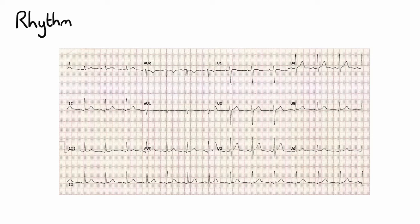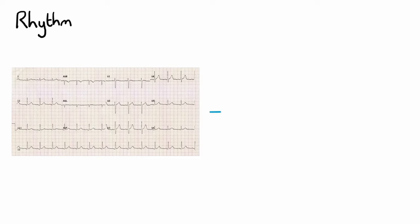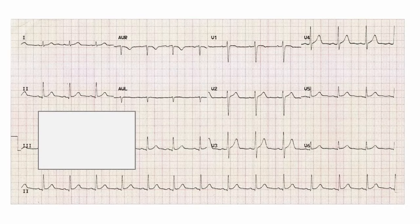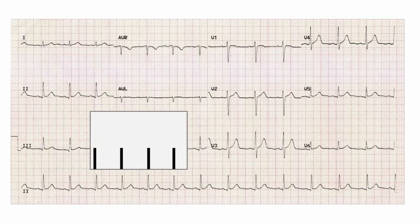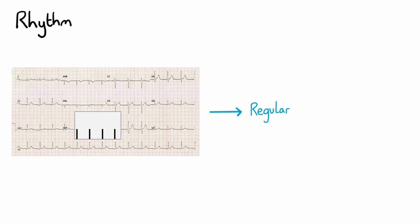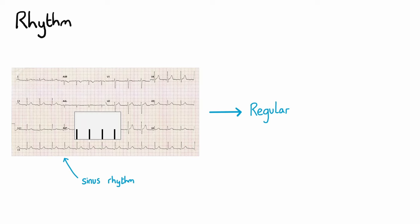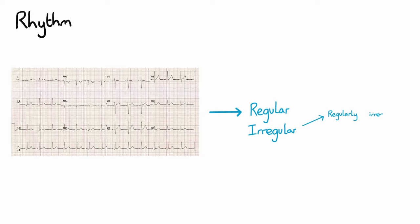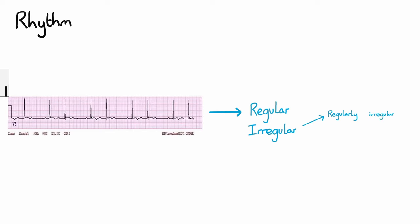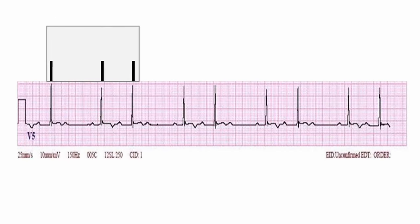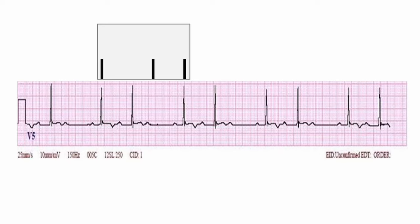The next step in our interpretation is the rhythm, which we use the rhythm strip to assess. Broadly speaking, we can classify rhythms as regular or irregular. The safest method for assessing rhythm is placing a piece of paper above the start of the rhythm strip and marking three or four R waves. You can then move the paper along the strip. If the lines match up with the subsequent R waves, then the rhythm is regular.